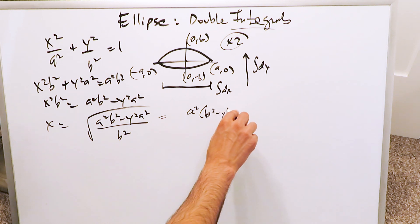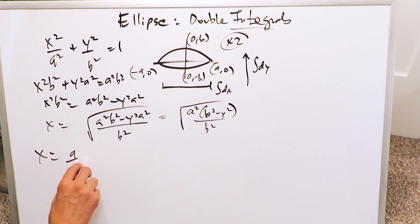which would be a b squared minus y squared all over b squared, and then this is all under a root. When you clean it out, you really have an a over b root b squared minus y squared. That's exactly what it is.